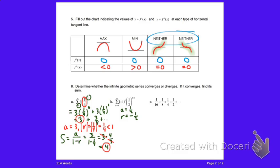That's a key trick — make sure you account for that negative. The sum is the first term one-half divided by one minus negative one-half, which is one-half divided by three-halves, or one-half times two-thirds.